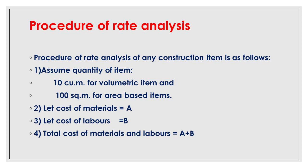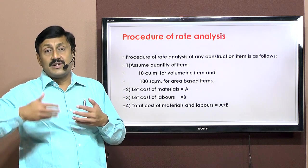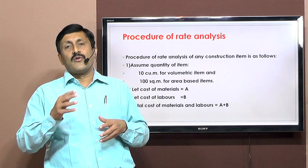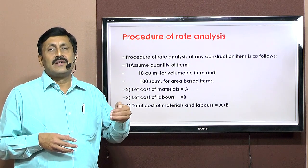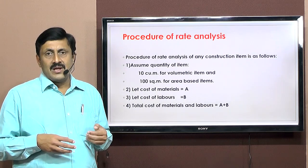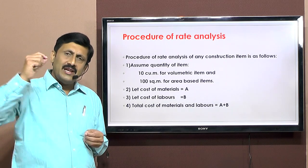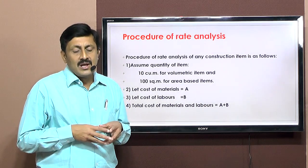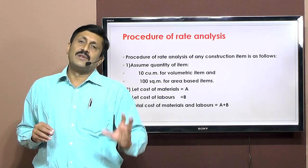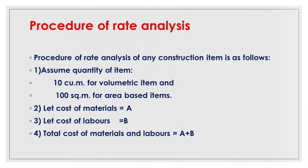Now we will discuss exactly what is the procedure of rate analysis. We have understood the meaning of rate analysis, the related terms, the factors on which the rate depends, and the data required. Now we will see actually what is the procedure. The first step is to assume the quantity of that particular item. This means you should know the principles of units — some construction items are volumetric, having length, breadth, and height/depth/thickness, so three dimensions are required to measure the quantity.